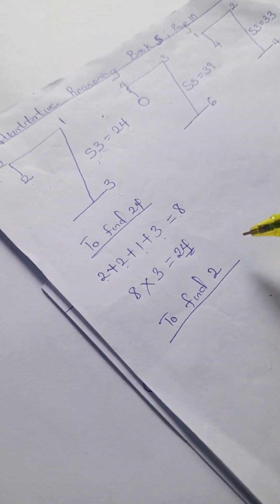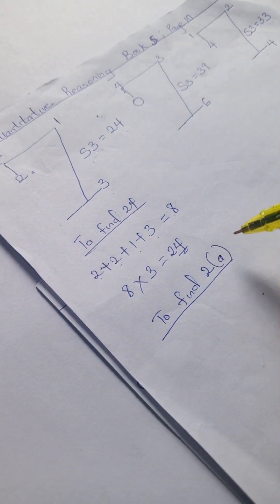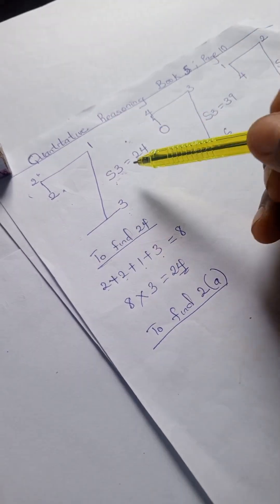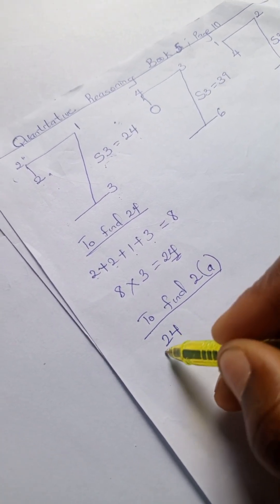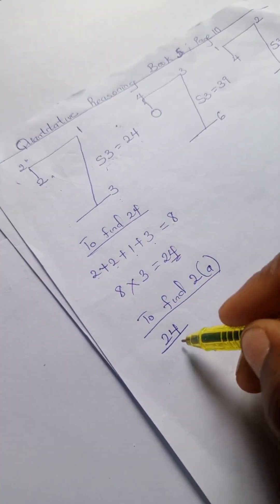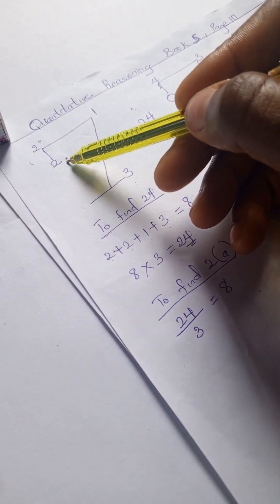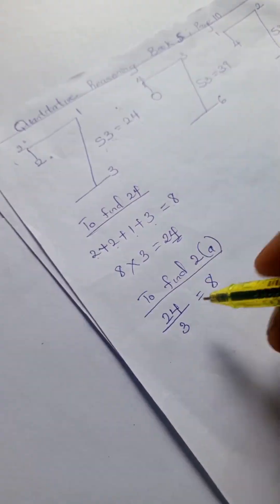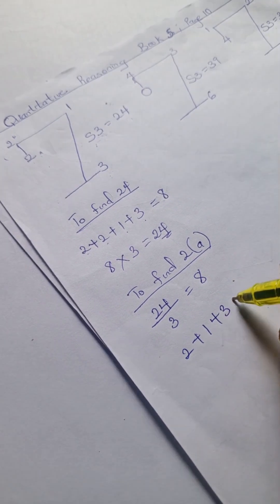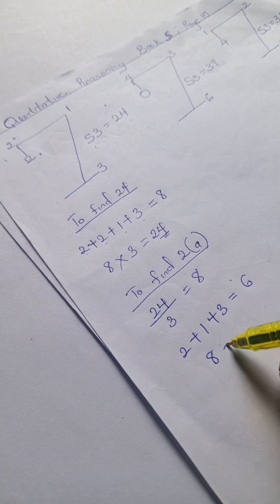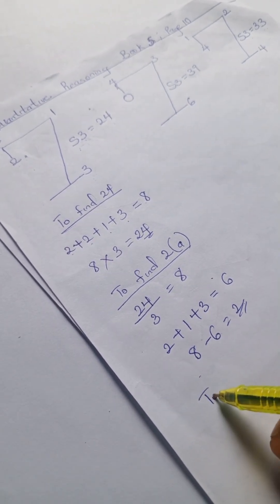To find the first two, let's call this A and B. We're going to firstly divide: 24 divided by 3 gives us 8. Now we're looking for this two, so we add the other digits: two plus one plus three equals six. So eight minus six, we have two.